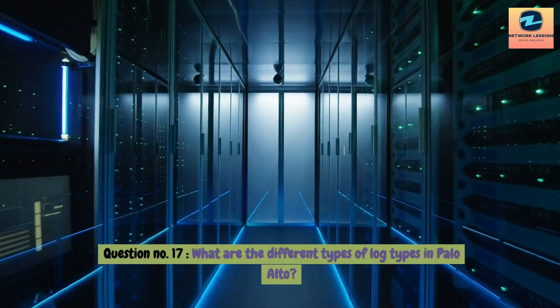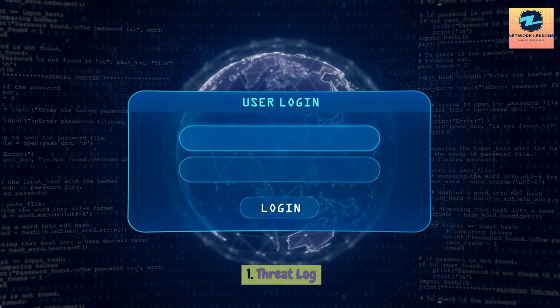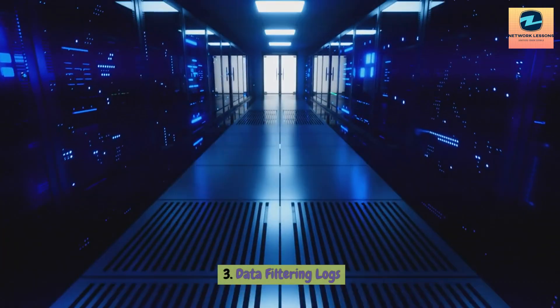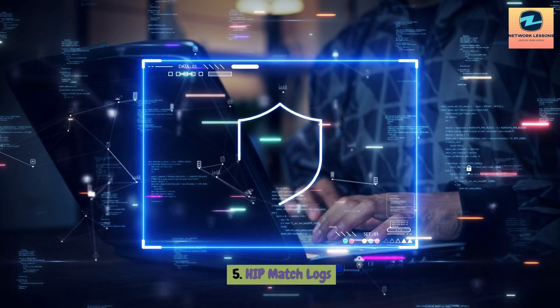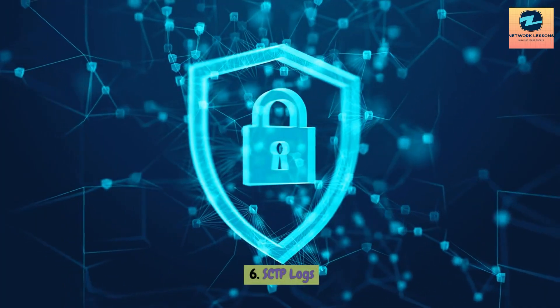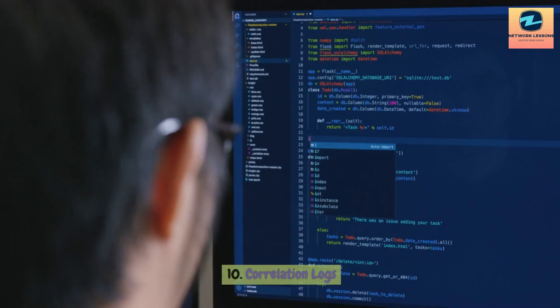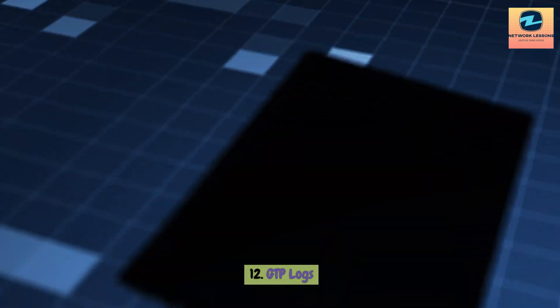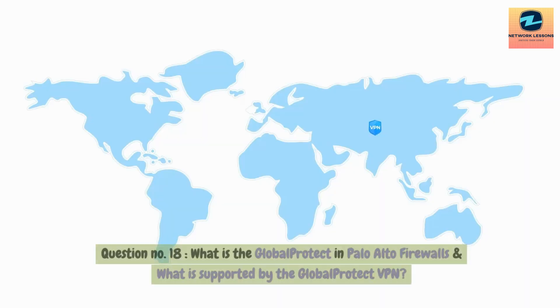Question 18: What are the different types of log types in Palo Alto? Answer: Users can view the following log types: (1) Threat logs, (2) URL filtering logs, (3) Data filtering logs, (4) Tunnel inspection logs, (5) HIP match logs, (6) SCTP logs, (7) Alarm logs, (8) Traffic logs, (9) WildFire submissions logs, (10) Correlation logs, (11) Unified logs, (12) GTP logs, (13) System logs, (14) Configuration logs.